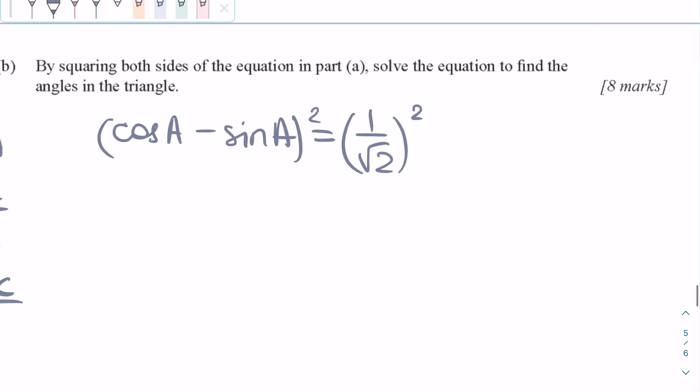Then we get cosine squared A minus 2 sine A cosine A plus sine squared A is equal to 1 over 2.